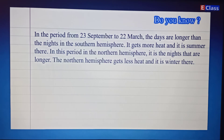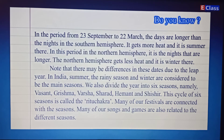In the period from 23rd September to 22nd March, the days are longer than the nights in the Southern Hemisphere — it gets more heat and it is summer there. During this period in the Northern Hemisphere, the nights are longer, it gets less heat, and it is winter. Note that there may be slight differences in these dates due to the leap year. In India, summer, the rainy season, and winter are considered the main seasons.